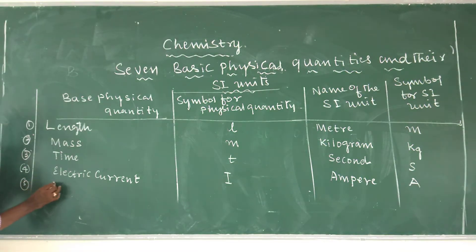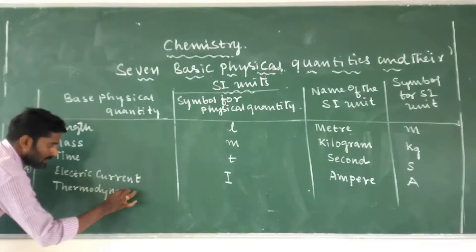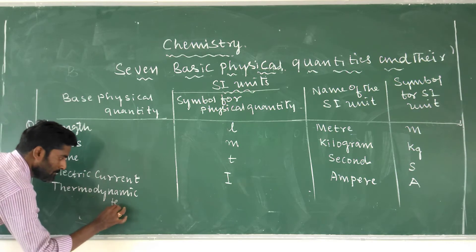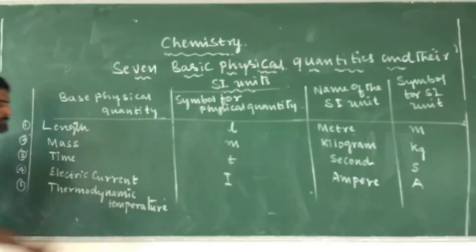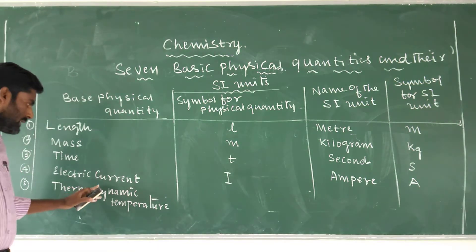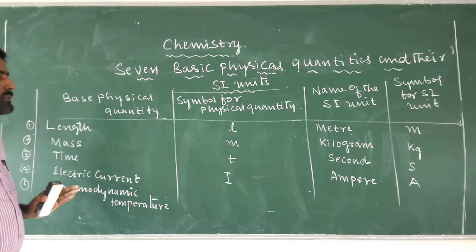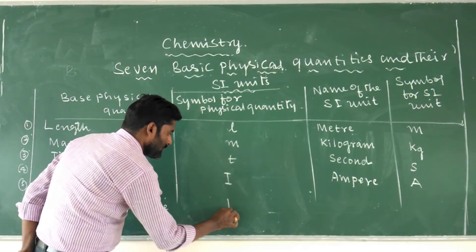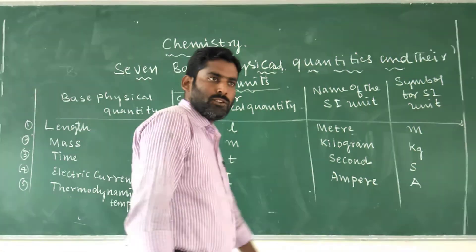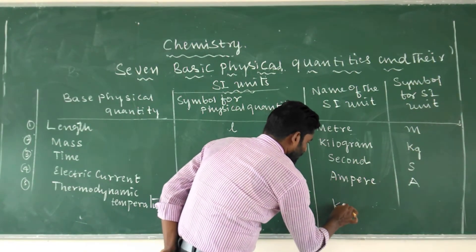The fifth basic physical quantity is temperature, also called thermodynamic temperature. It is denoted by capital 'T'. The SI unit of thermodynamic temperature is the kelvin, with symbol 'K'.